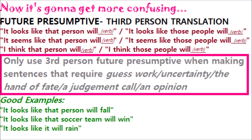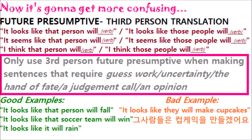Typically, you use the third-person future presumptive to describe something that is not certain — either because it's in the hands of fate, involves a judgment call, an opinion, or a guess. For example, you don't really want to use it for something like 'it looks like they will make cupcakes,' because making cupcakes is a deliberate act that doesn't leave a lot of room for uncertainty and fate. It should be used for situations with even less certainty, or where an opinion is expressed.